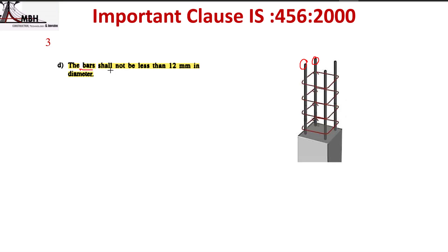Regarding the diameter of longitudinal bars, the code recommends that the bar diameter shall not be less than 12 mm.